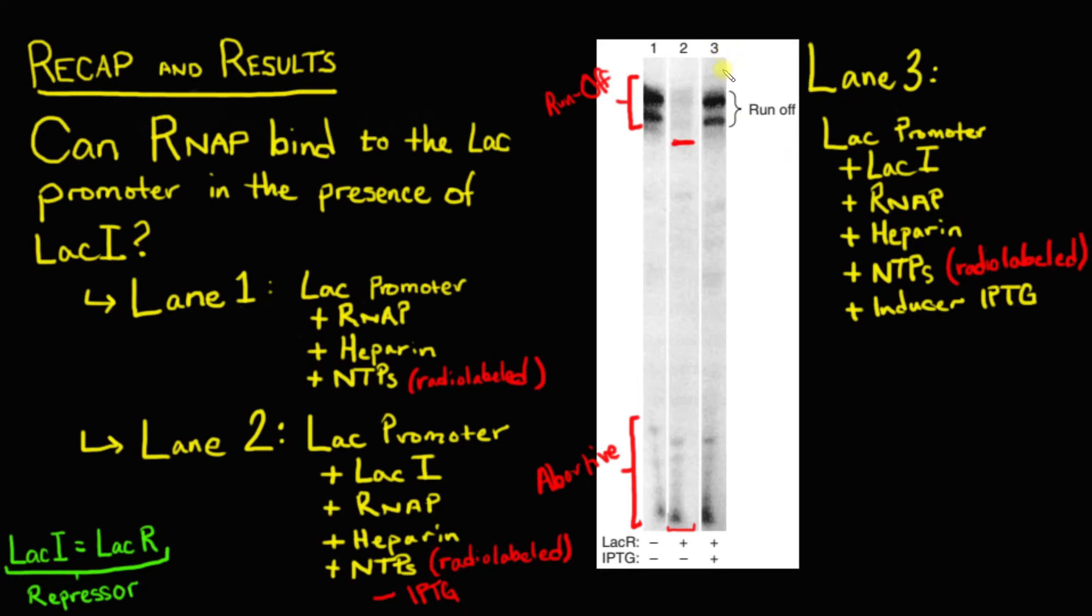In lane three, the authors performed the same experiment as in lane two, except this time they did add in the inducer at the end of the experiment. So when they added in the lac I, the repressor here, it bound to the operator and blocked RNA polymerase from actually transcribing, from elongating a transcript, but RNA polymerase was in fact still able to bind as is evidenced by these abortive transcripts down here. Then when they added in NTPs and the inducer, this inducer alleviated the repressor. So the repressor left and that RNA polymerase that had bound was in fact able to proceed with transcription elongation.